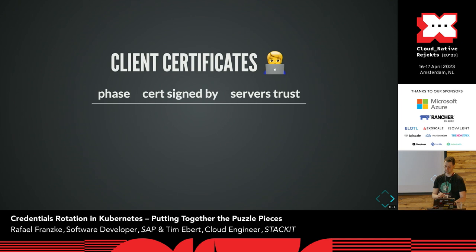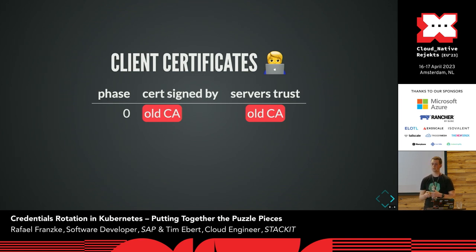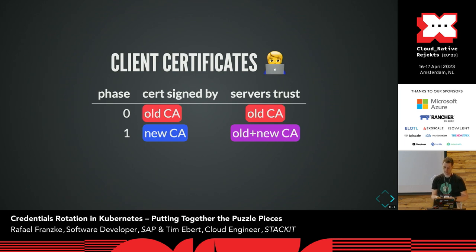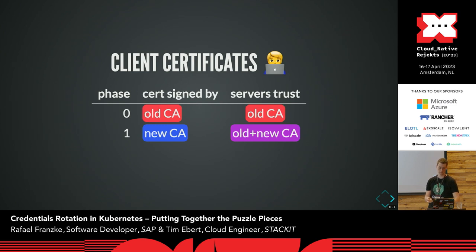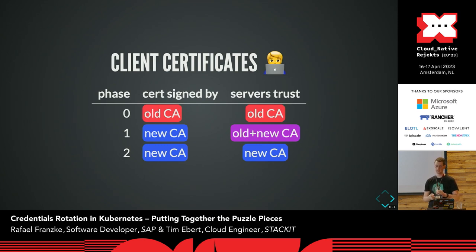For client certificates, it's a bit different. Before rotation, the old CA signs the client certificates, and servers only accept clients authenticating with the old CA. When rotation starts, the server keeps accepting both old and new CA for authentication, and we start signing new client certificates with the new CA. When clients refresh their credentials, they get a fresh client certificate trusted by the API server. In the second phase, the server stops accepting client certificates signed by the old CA, so all old client credentials are invalidated. This bundles approach — keeping old and new in parallel — also works for other credential types like the service account signing key.